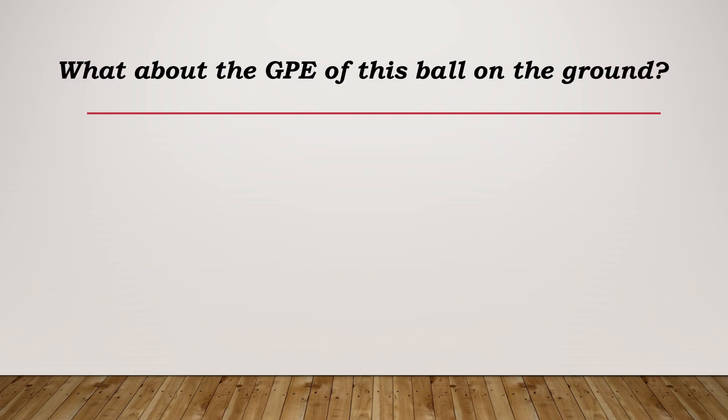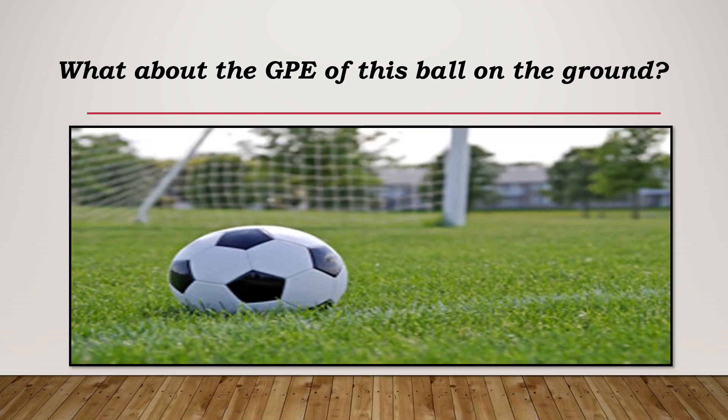What about a ball sitting on the ground — does it have gravitational potential energy, or is it zero? The answer is it has no gravitational potential energy. Because the ball is sitting on the ground, its height is zero. In the formula, anything multiplied by zero equals zero, so the gravitational potential energy is also zero. The only way for the ball's gravitational potential energy to increase is if you lift it up or place it at a higher position.